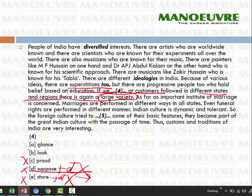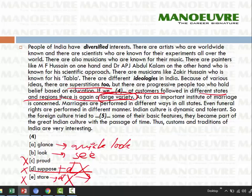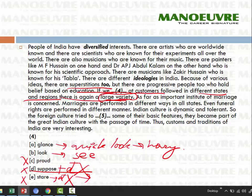Left with glance and look. Glance means a quick look — jaldi se dekhna aur aage barh jaana. Look means to see, possibly with patience and interest. Since there is a large variety across many states and regions to cover, we won't go into detail for each — we will just take a glance. Quickly dekhenge har cheez ke baare mein, whether states or regions. That is why 'glance' is the probable word — it gives a better fit compared to 'look.'